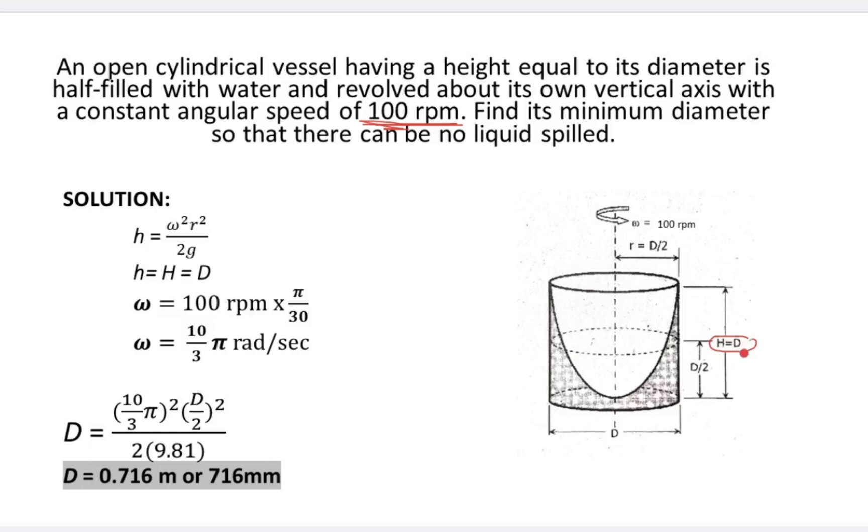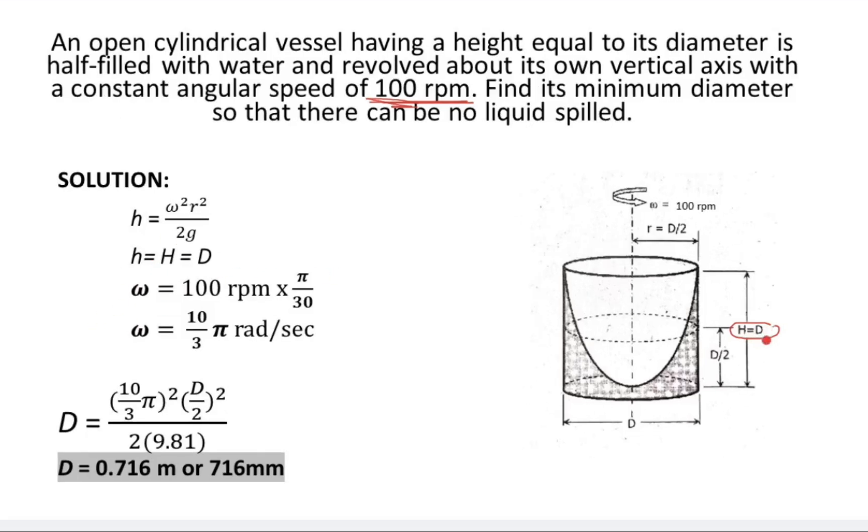I'm solving for ω here. 100 revolutions per minute times π/30. What is π/30? π/30 equals one revolution per minute. So we multiply to get ω: 100 rpm × π/30 = 10π/3 rad/sec.